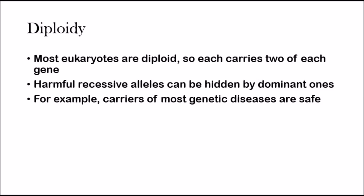Sometimes harmful recessive alleles can be hidden by dominant ones. There are two types of alleles — recessive and dominant. Dominant alleles will always take the place of recessive alleles and display that phenotype. So because of diploidy, even if a recessive allele is present, there's going to be one more allele, and since each eukaryote carries two copies of each gene, that dominant one can take over the recessive allele and the organism will be safe. Most genetic diseases are found on recessive alleles, so even if the organism has a recessive allele for a genetic disease, it can have a dominant healthy one that prevents the disease.